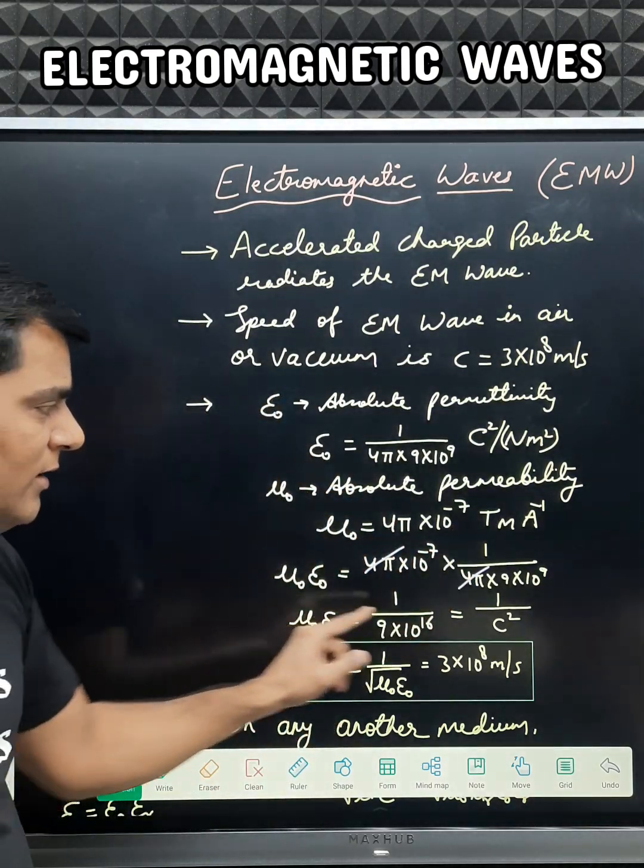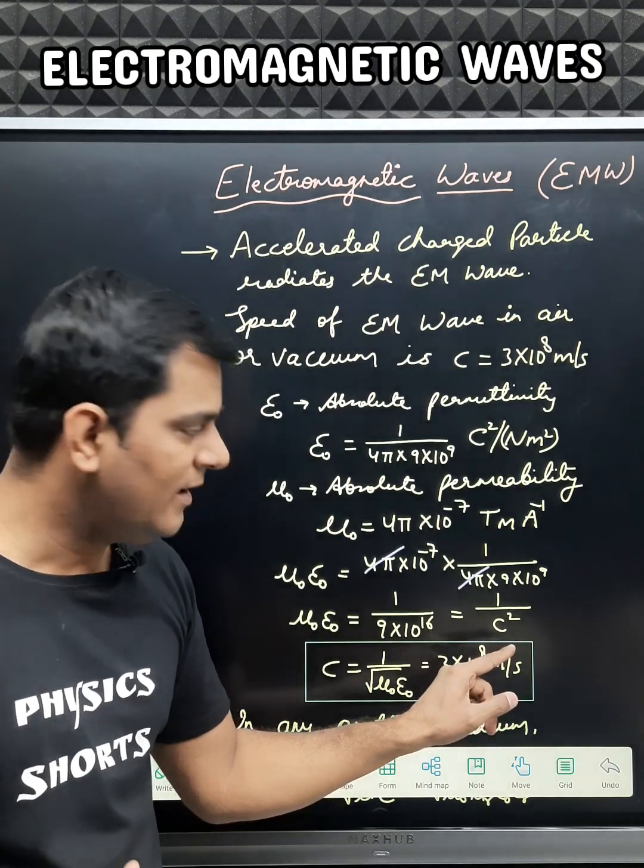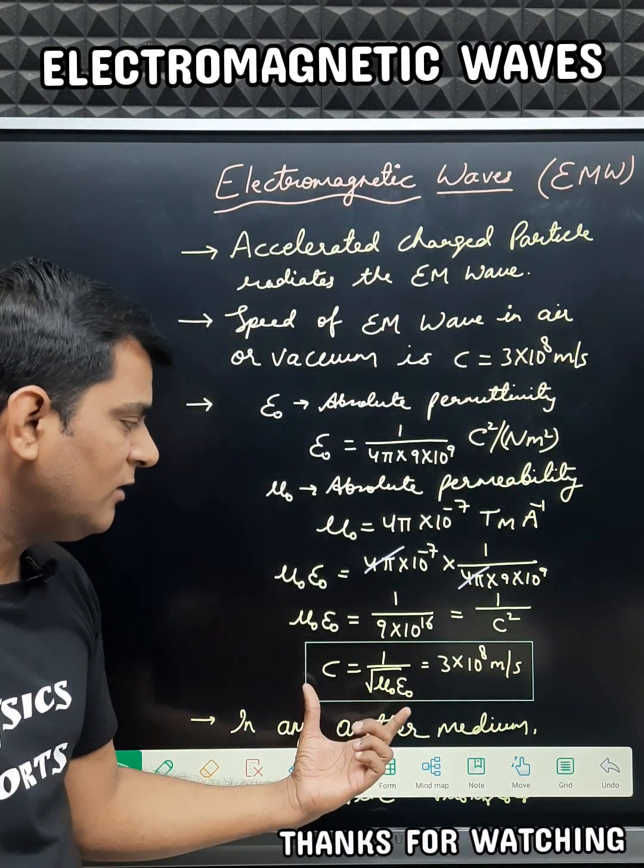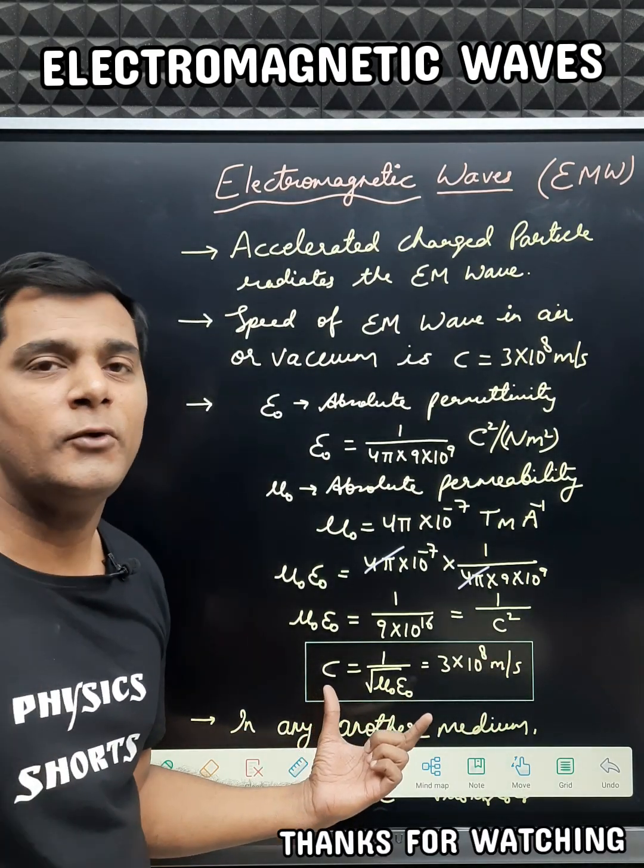When we multiply these two values, we get 1/c^2. Hence, we can write the equation c = 1/√(mu_0 epsilon_0).